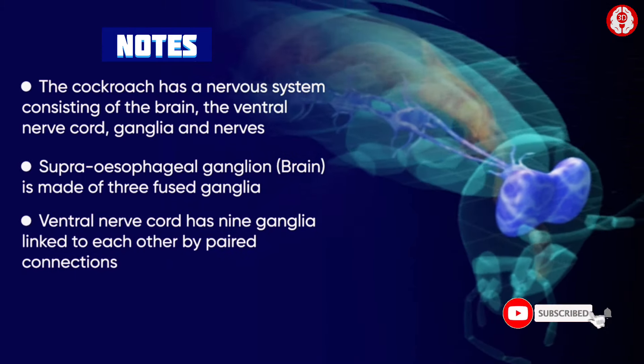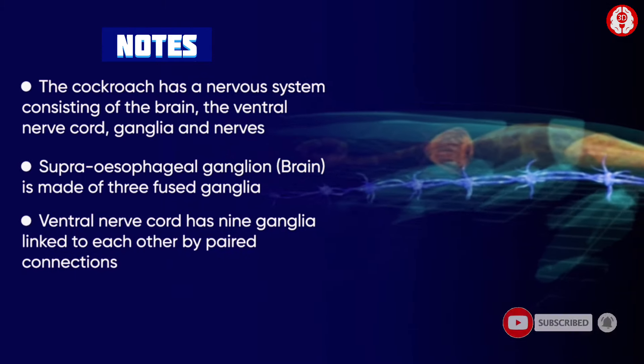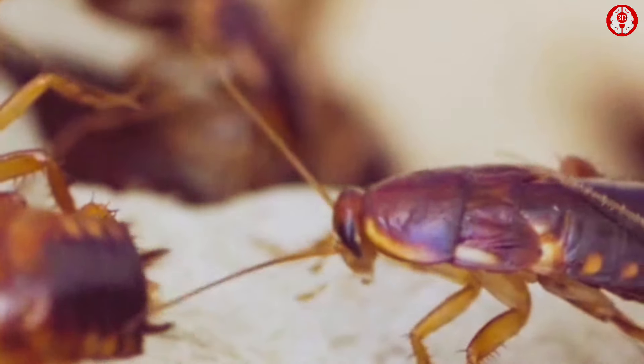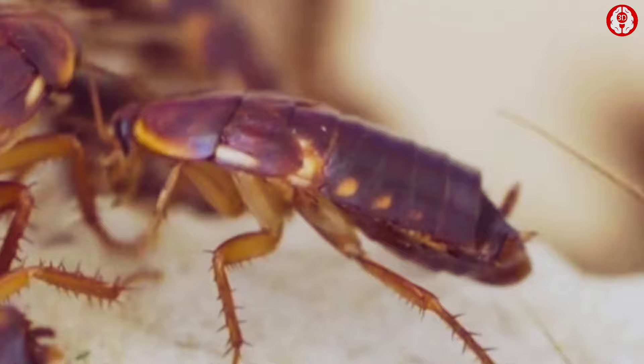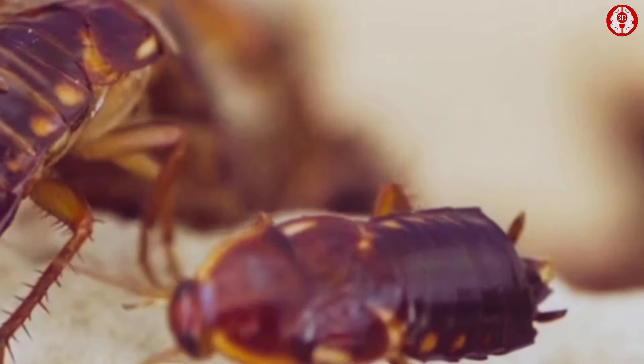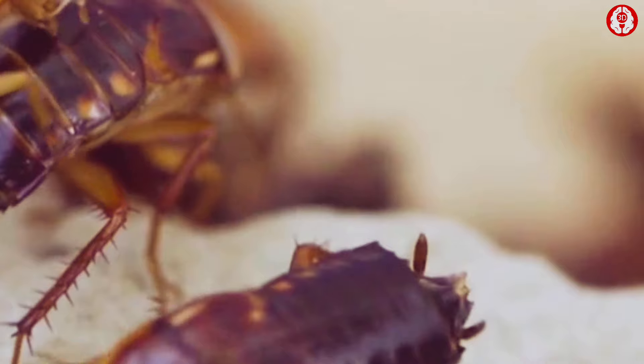What would you find if you compared a cockroach's brain to the human brain? The cockroach's brain is definitely smaller because, you know, cockroaches themselves are smaller.